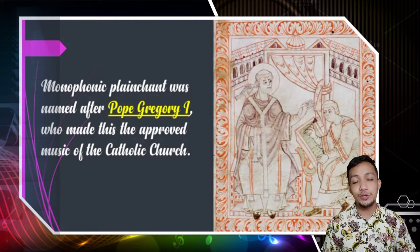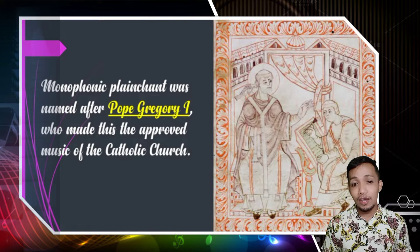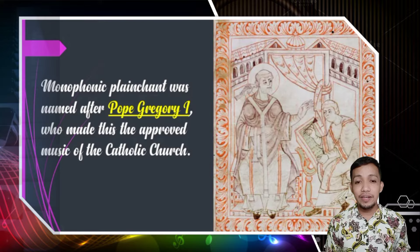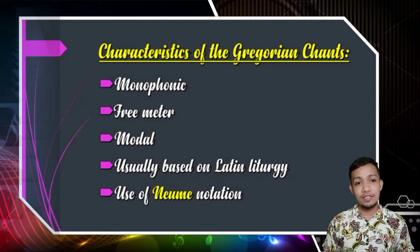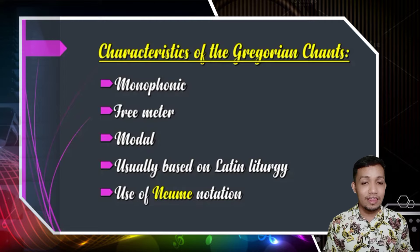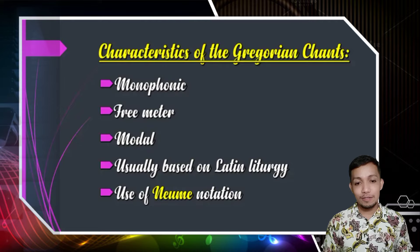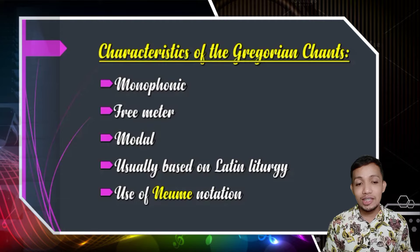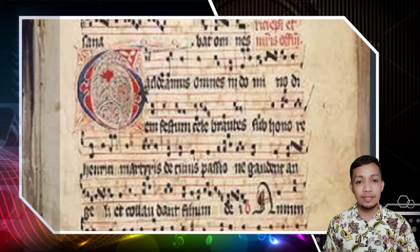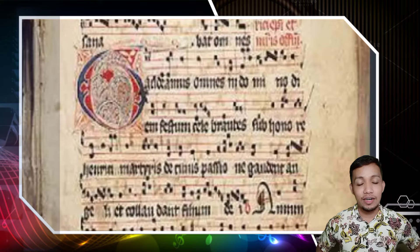Monophonic plain chant was named after Pope Gregory I, who made this the approved music of the Catholic Church. So during the medieval period, this monophonic plain chant as an early style of music was called Gregorian chant. There are different characteristics of the Gregorian chant. The first characteristic is monophonic, which has only one melodic line. The second characteristic is free meter, which means it has no particular number of beats per measure. The third characteristic is modal, which means it uses the seven tones and is usually based on Latin liturgy. And also, it uses neume notation. Examples of neume notation are shown above, and those are the neumes, or we call them the earliest form of notating symbols.